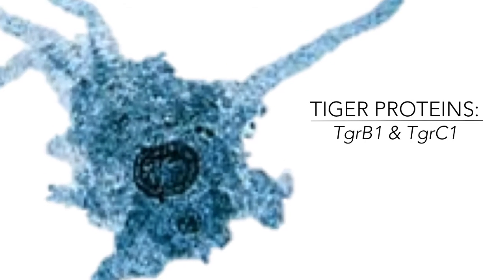The TIGER genes transcribe two such protruding proteins called TGRB1 and TGRC1, which act to recognise each other.